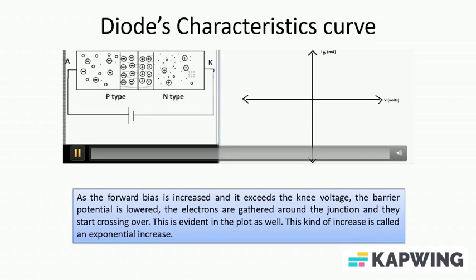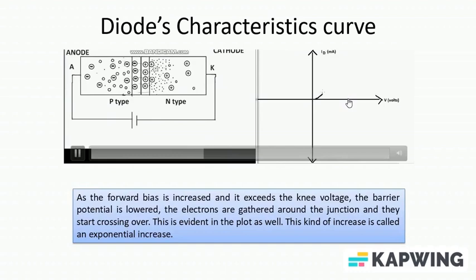I tried to explain the process of forward biasing along with the diode's characteristic curve. As we keep on increasing the applied voltage, you can see parallelly from on this side the moment the applied voltage exceeds the knee voltage.